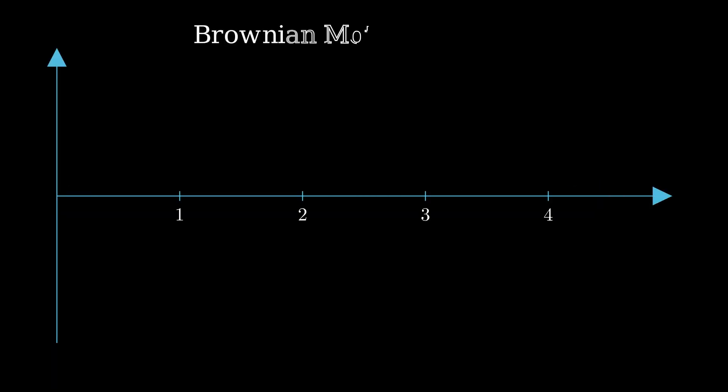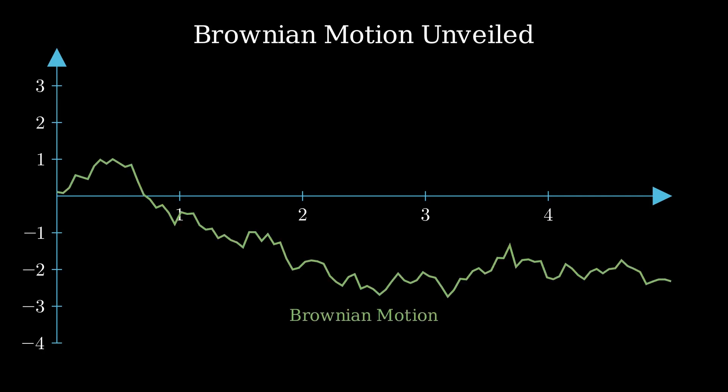Meet Brownian motion. It's a wild, non-stop wiggle, like a bee buzzing in a field. Every move is random. Increments follow a bell curve, average is zero, no gaps, always moving. Think stocks on steroids - chaos but continuous.